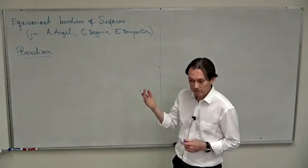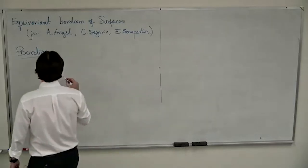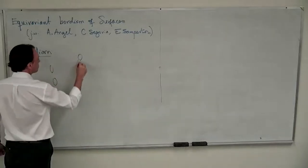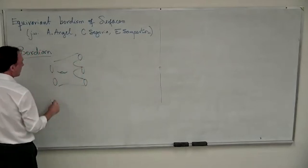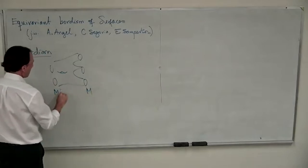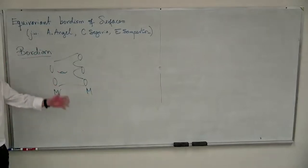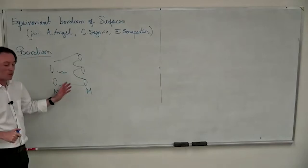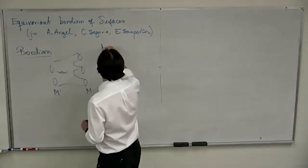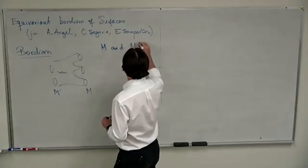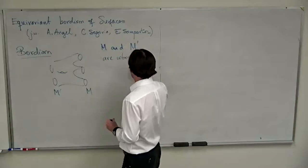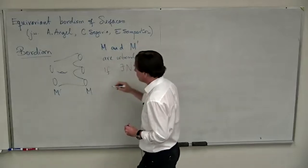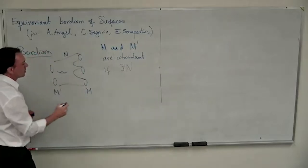The idea is to classify or understand when a manifold becomes the boundary of another one — that's basically the basic question. I would like to get the different equivalence classes of manifolds, and I'm going to say that two closed manifolds M and M′ with no boundary are going to be in the same equivalence class, or cobordant,